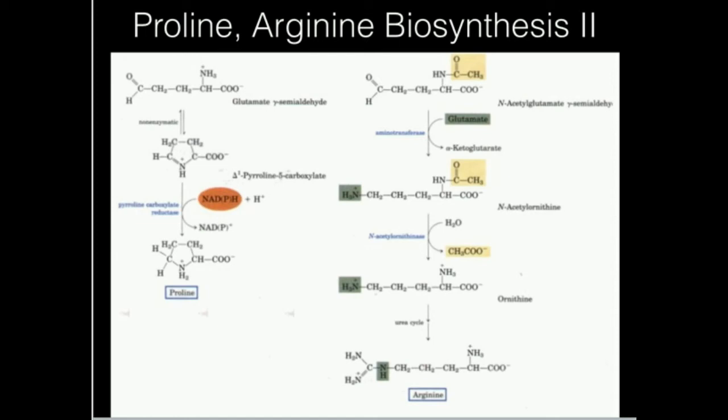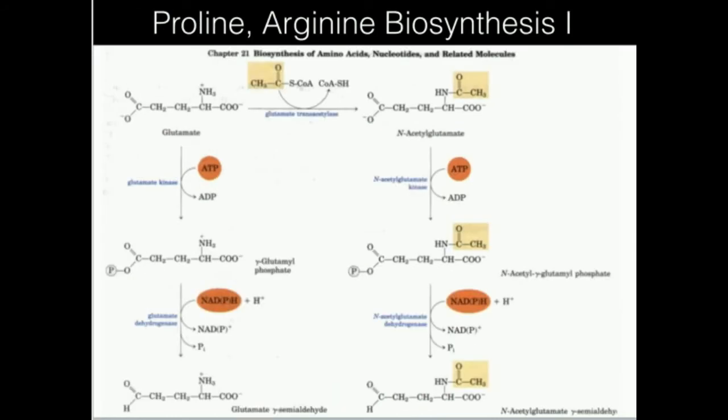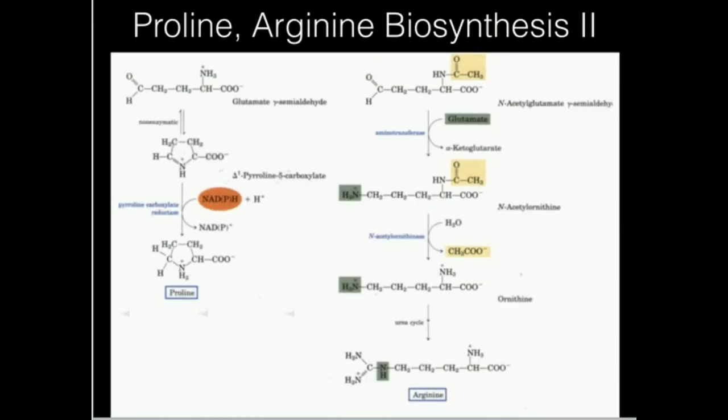Both arginine and proline initially come from glutamate. Remember also that glutamate is synthesized from alpha-ketoglutarate, which comes from the TCA cycle. So you could consider alpha-ketoglutarate being used to make glutamate, glutamine, and then also proline and arginine.